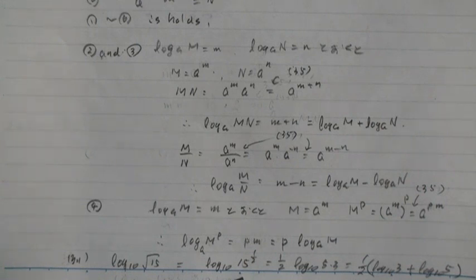And the example. Log 10 root 15 equals log 10 15 to the 1 over 2 equals by circuit 4 1 over 2 times log 10 15. 15 equals 5 times 3.